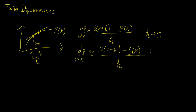This is what we call a forward difference. We're taking an initial point — the point where we're standing — then taking the next point in the sequence, and approximating the derivative based on the next value of the sequence.